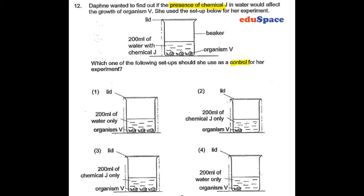We should only look at either option 1 or 4. The better answer will be option 1, so that the number of organism V is also the same but with 200 ml of water only.